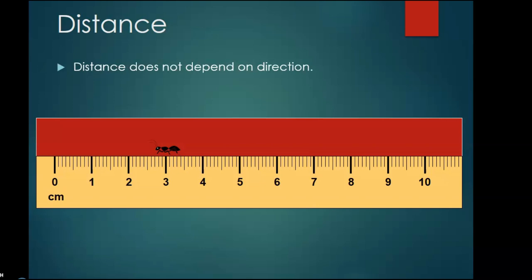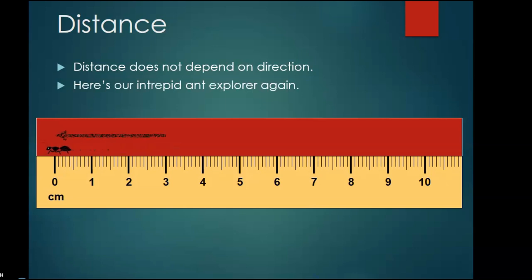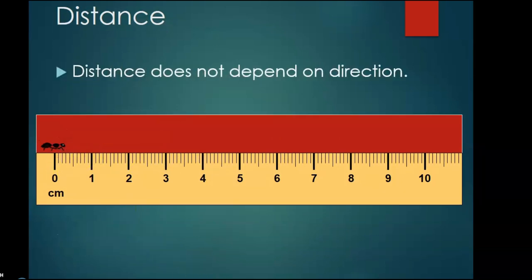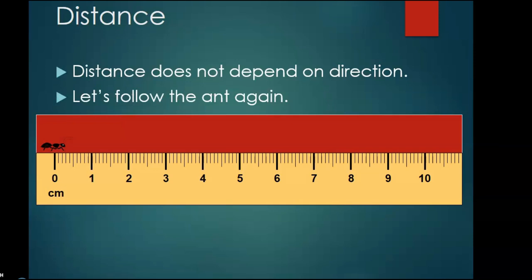Distance does not depend on direction. Here's our intrepid ant explorer again. Now what distance did the ant travel? The answer is three centimeters: one, two, three. Distance does not depend on direction. Let's follow the ant again.